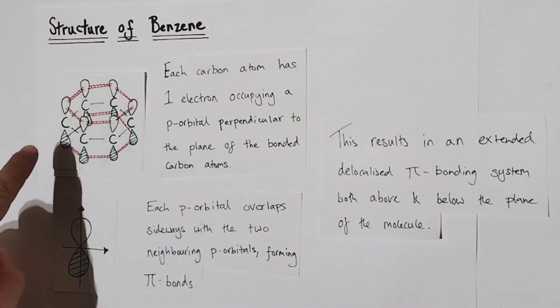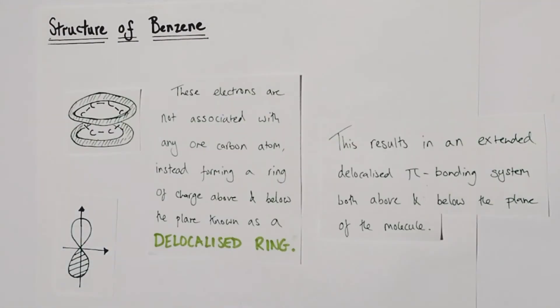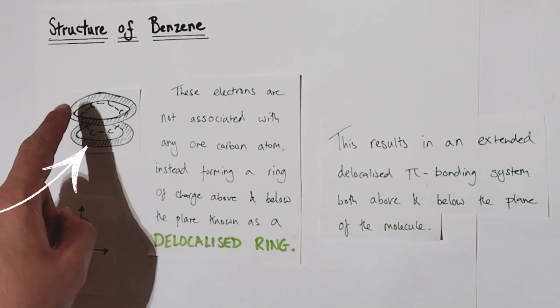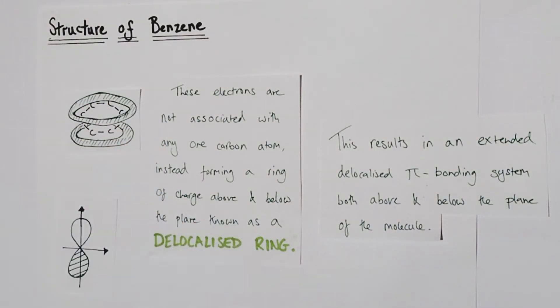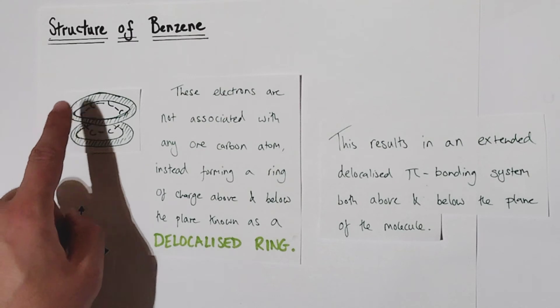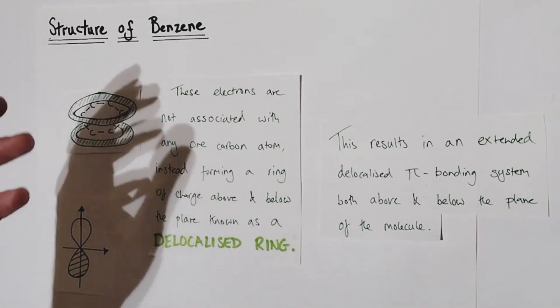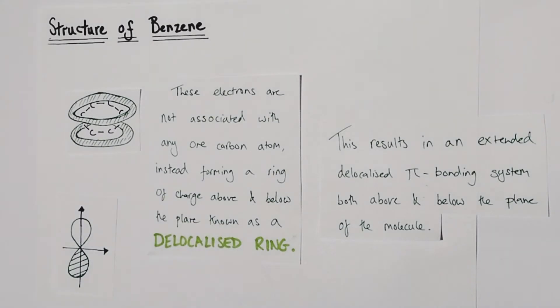Now this is a good diagram but maybe it's better represented like this. Now you can see I converted the diagram into electron density diagram. We have rings of electron density both above and below the plane of the molecule and what it's trying to imply is that these electrons are no longer associated with any one carbon instead they're forming a ring of charge both above and below the plane of the molecule which is known as a delocalized ring.